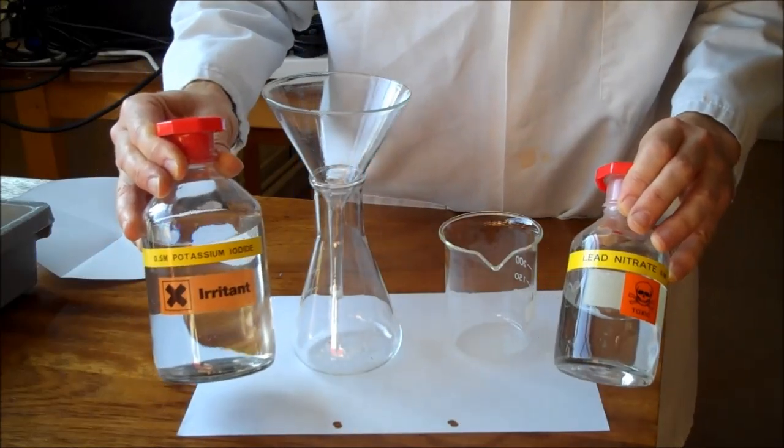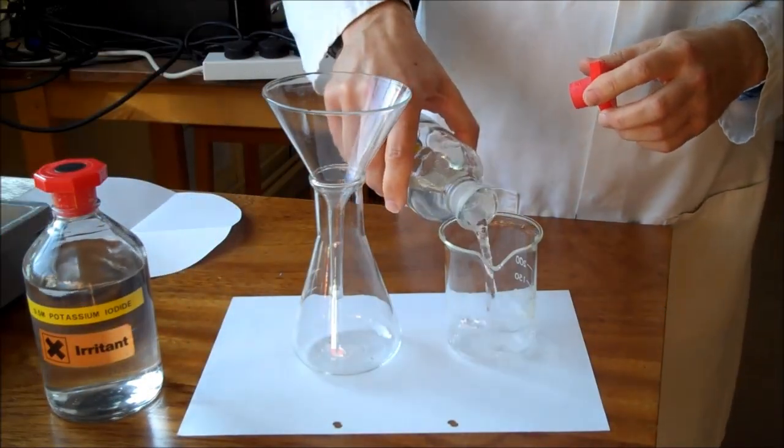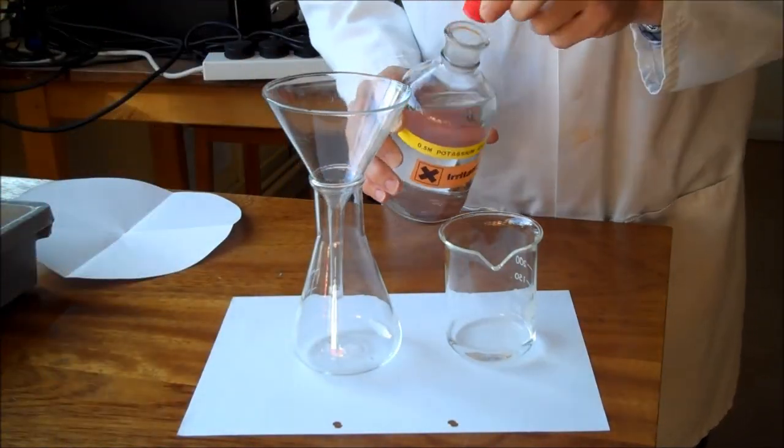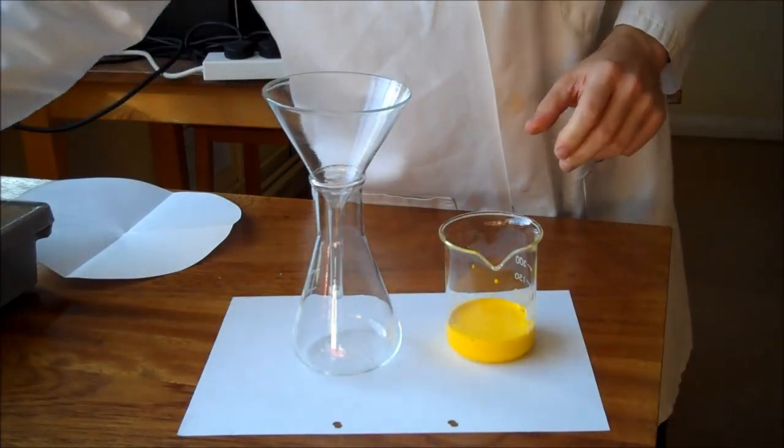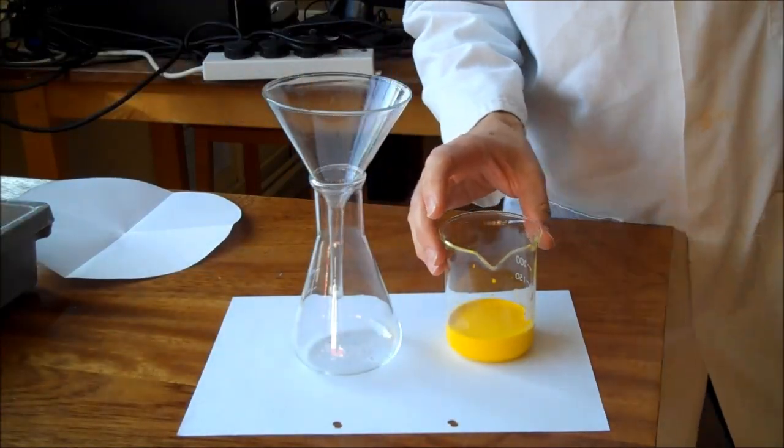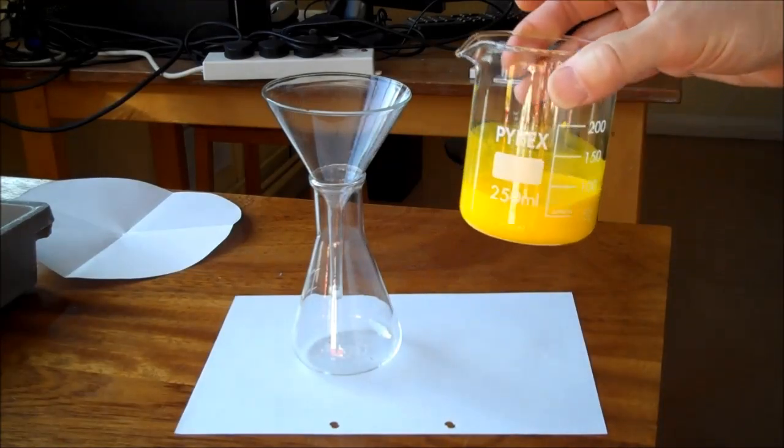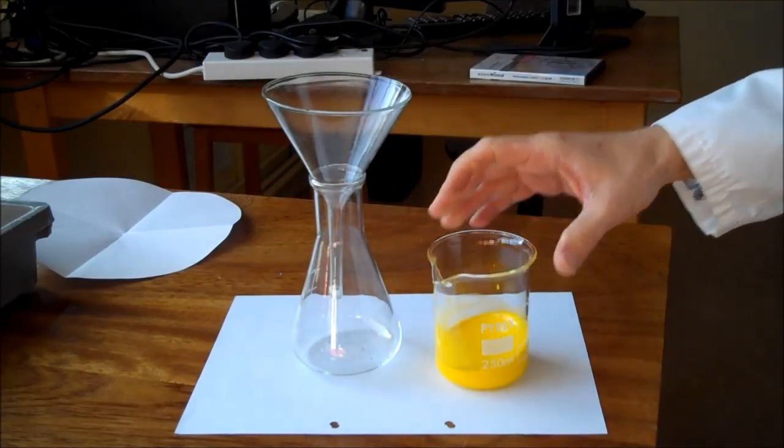I'm going to put a bit of lead nitrate in a beaker and then add some potassium iodide. We're going to make lead iodide and as you see it goes bright yellow but also it goes cloudy. It's murky, you can't actually see through it anymore. So how are we going to get the insoluble solid out? We need to filter it.